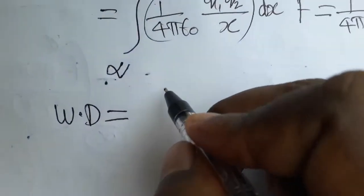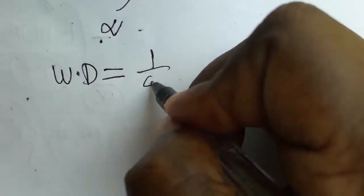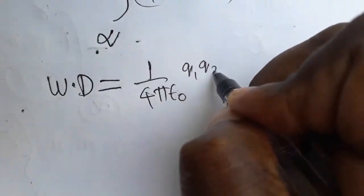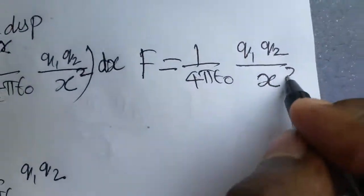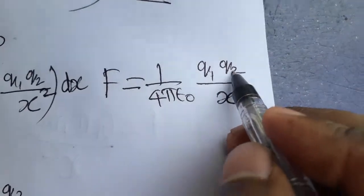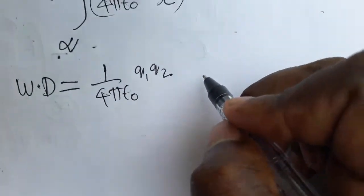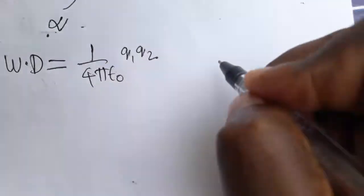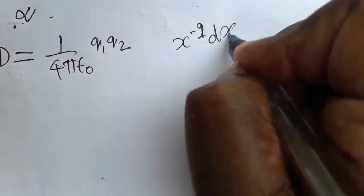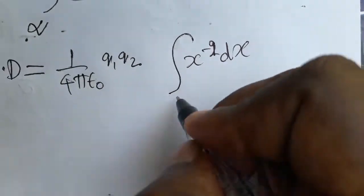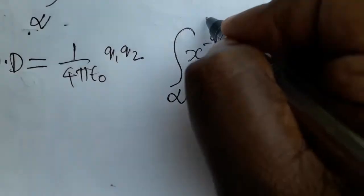So work done equals the integral of 1 divided by 4 pi epsilon naught times q1 q2, which is common outside. By Coulomb's law we have x squared in the denominator, which I bring to the numerator as x to the minus 2. So the integral becomes: 1 over 4 pi epsilon naught times q1 q2, integrated x to the minus 2 dx from infinity to r.